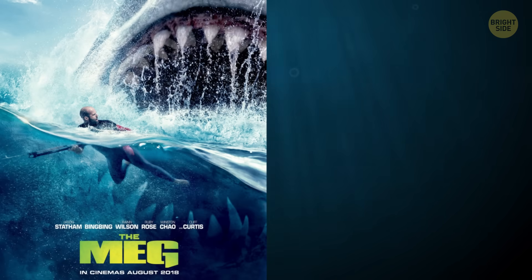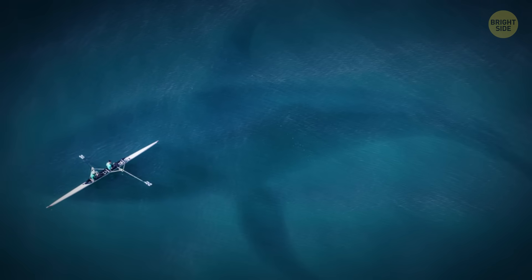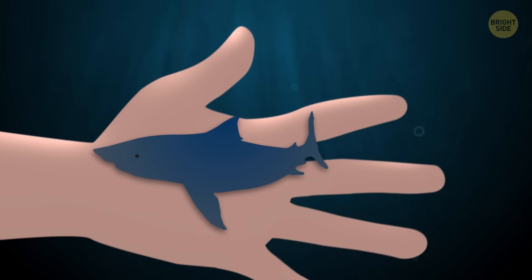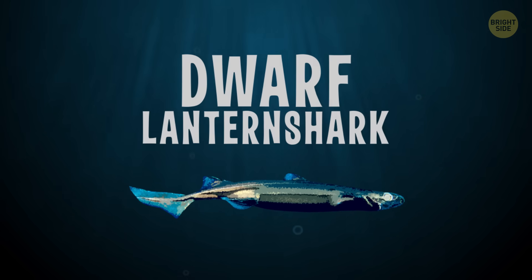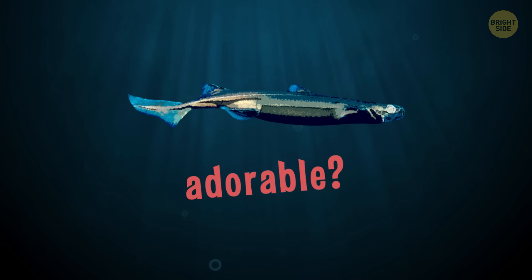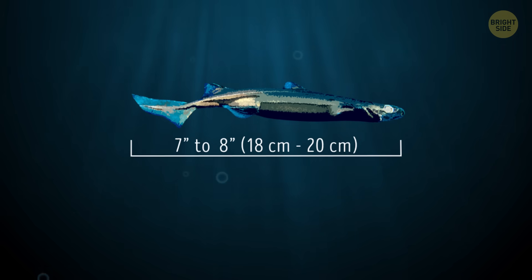Sharks. Thanks to horror flicks like The Meg and the timeless classic Jaws, it's no secret that sharks are super big and scary. But did you know there are sharks that could fit right inside the palm of your hand? According to National Geographic, one of the smallest sharks scientists know about is called the dwarf lantern shark, and they're an adorable 7-8 inches long.